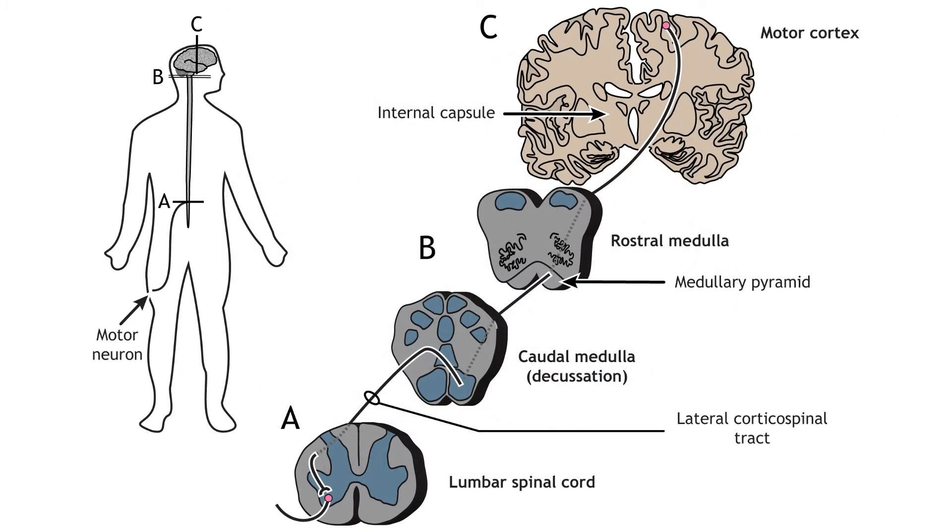The largest of the lateral pathways is the corticospinal tract. This pathway sends information directly from the motor and premotor cortices down to the motor neurons in the spinal cord. Cortical axons travel to the medulla via the internal capsule, a white matter structure in the brain. The corticospinal tract passes through the medullary pyramids and then decussates in the caudal medulla.